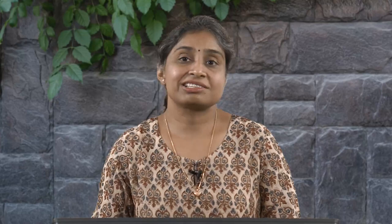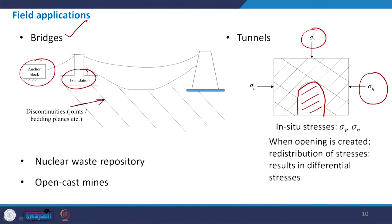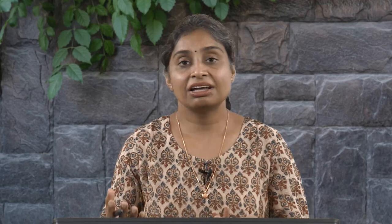For tunnels, consider a rock mass with in-situ stresses acting vertically as sigma-v and horizontally as sigma-h. When an excavation is made, the free surface causes stress release, resulting in redistribution of stresses in the neighboring rock mass, which can cause differential stresses. We need to know these redistributed stresses — this will be covered through elastic analysis, elasto-plastic analysis, and lining analysis.